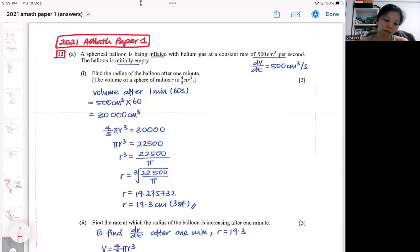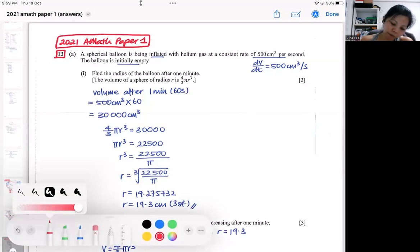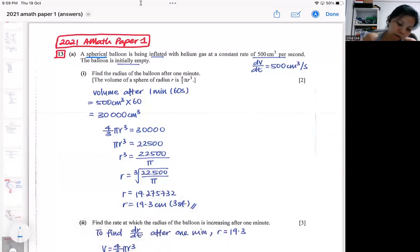So what do I mean by forget the idea? First of all, we started off with a spherical balloon, it's a sphere to start with. In this question, they gave you the volume of a sphere, so that means subsequently you will need to use it. It's an empty balloon, and then they start to pump in helium gas at a constant rate of 500 cm³ per second.